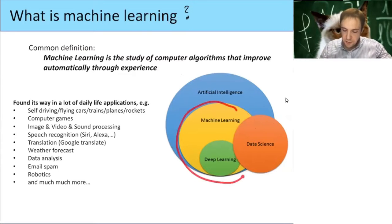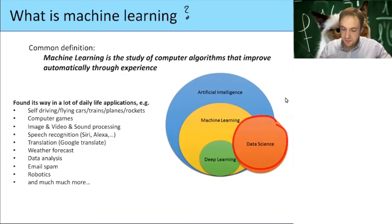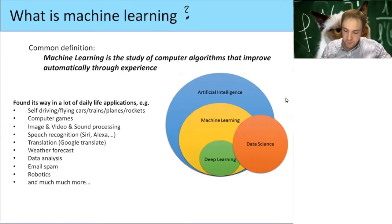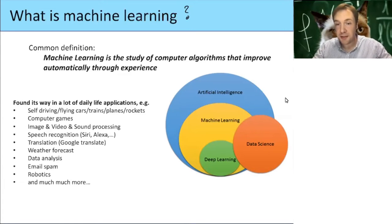Machine learning also has a lot to do with data science, because usually when a machine learns it uses a lot of data, so these two fields are really connected. One subfield of machine learning is deep learning, which will also be covered at the end of the lecture.